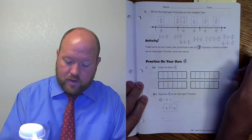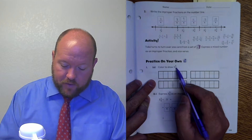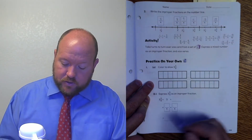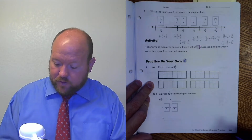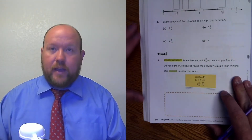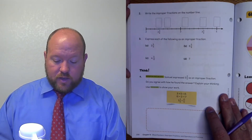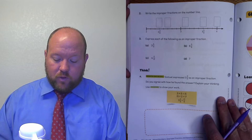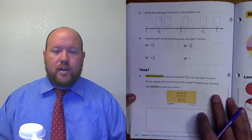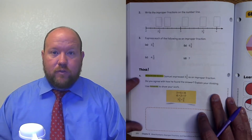Now color in three and five sixths — this is a practice on your own. You're going to go ahead and work through pages 269 and 270 independently. Try to do the think section, but if you're struggling with that one, that's okay. We'll come back and look at it together, but see if you can figure it out on your own.